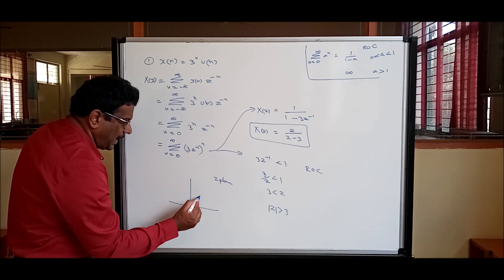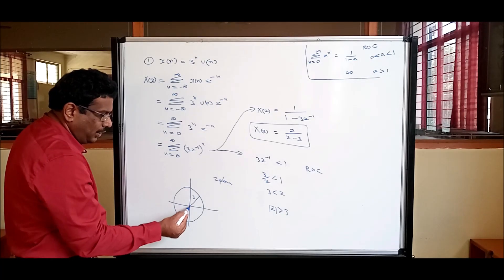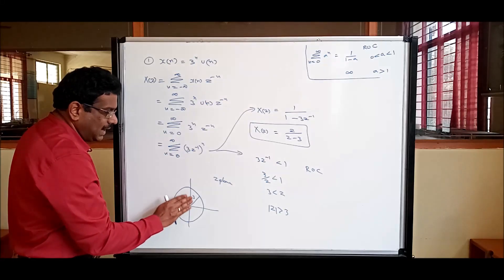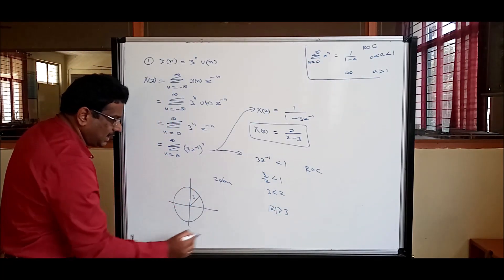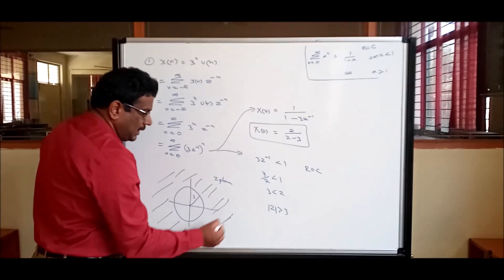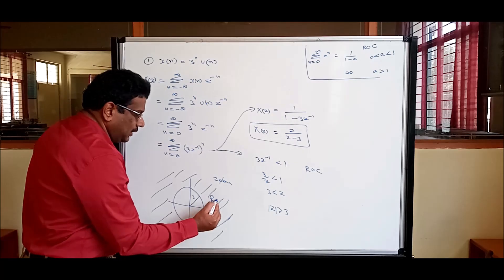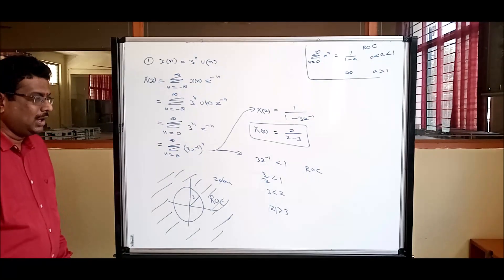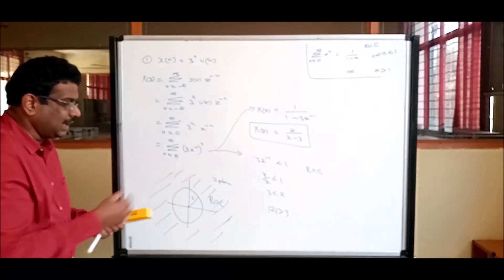For the ROC, draw a circle of radius 3 in the z-plane. Regions: |z| < 3 is inside the circle, |z| > 3 is outside. The ROC is |z| > 3, the outside region. In this region, for any value of z you substitute, the sequence will converge and give a finite answer. So the final answer is X(z) = z/(z - 3), ROC: |z| > 3.